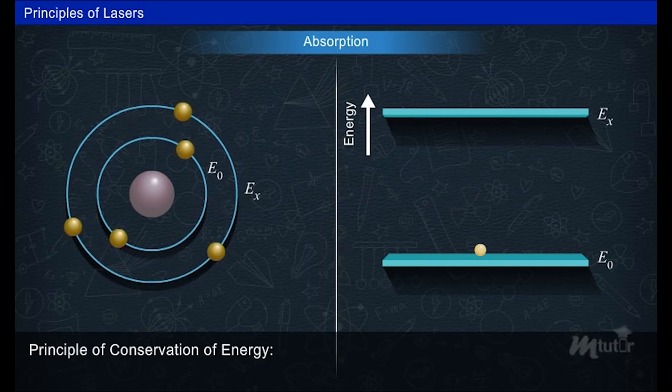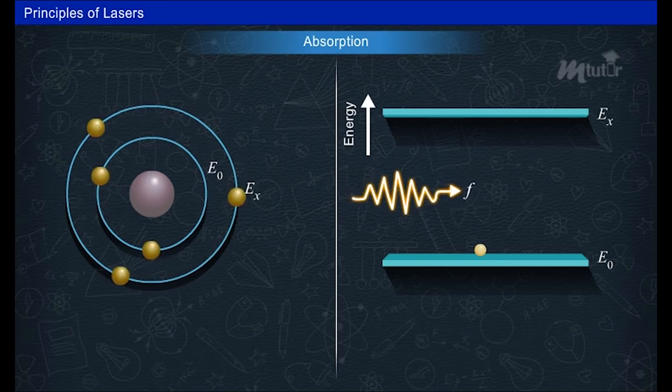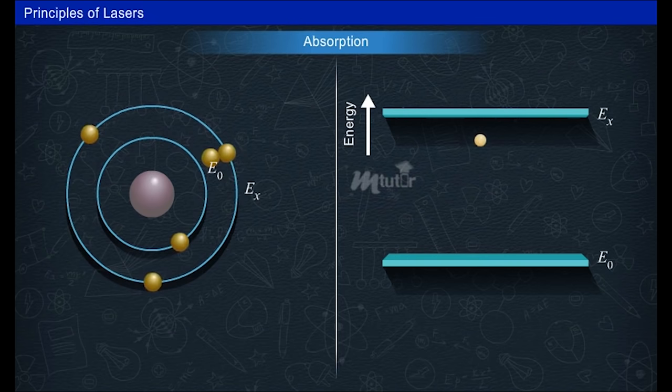From the principle of conservation of energy, the electromagnetic energy is given as the difference of E_x and E_0. When the photon energy falls on the electron, it jumps from the ground E_0 to the excited state E_x by absorbing the energy. This process of absorbing energy from photons is known as absorption of radiation.